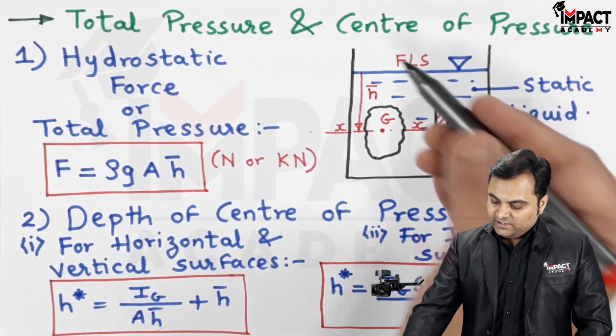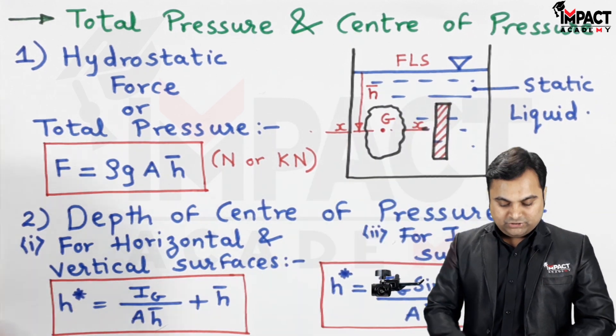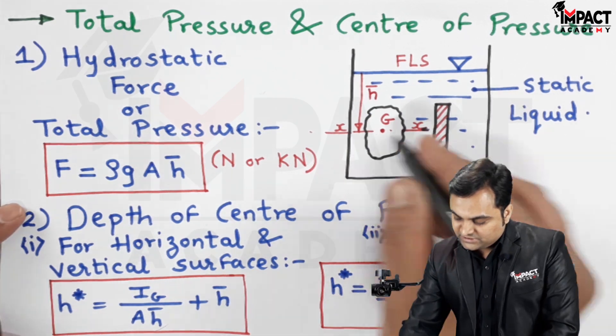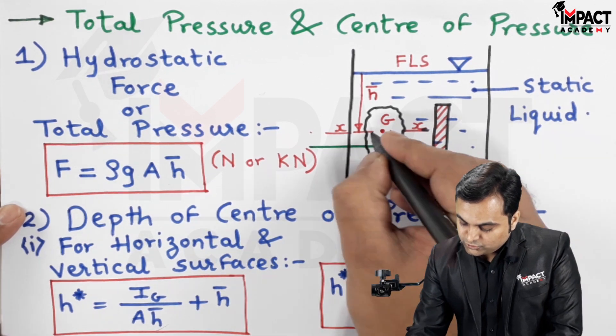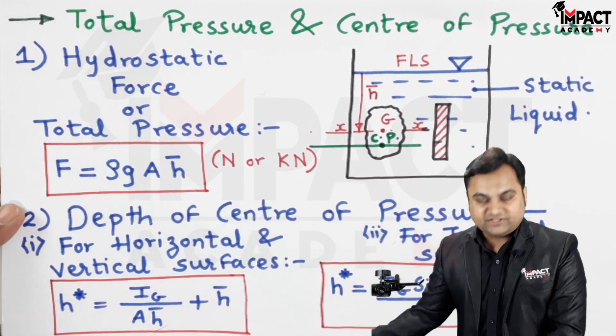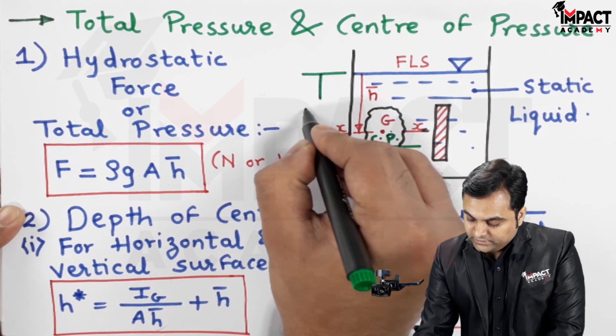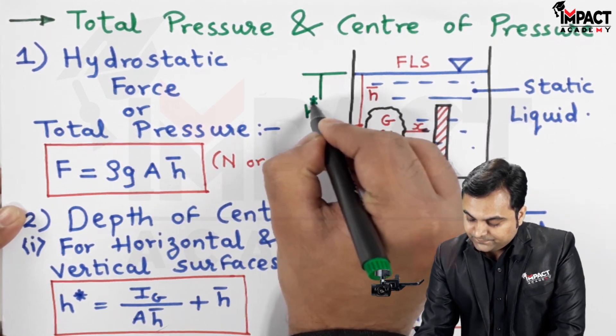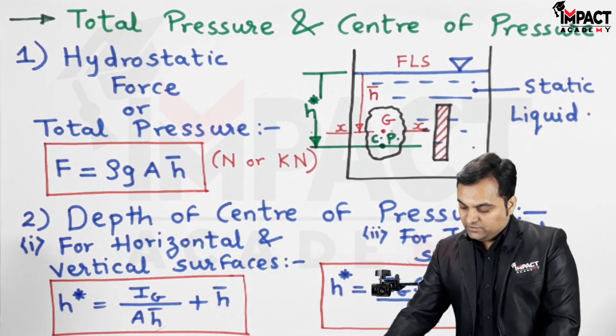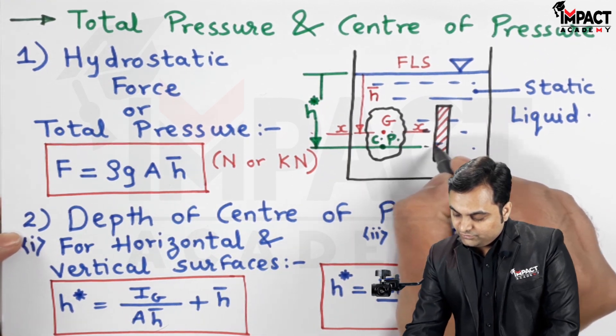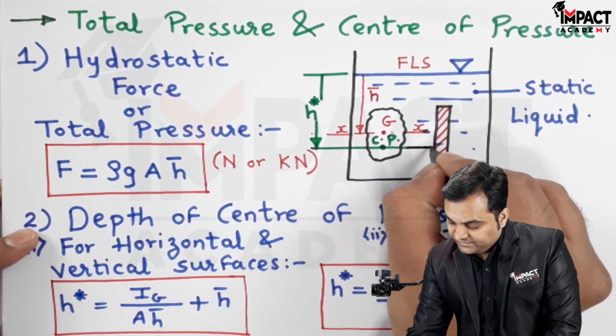For that if h bar is up to the centroid then h star will go even beyond this point. Taking an example that it acts over here, so this point basically would be called as cp also called as the center of pressure and its height from the free liquid surface is denoted by h star. So this is the depth where the total pressure acts.